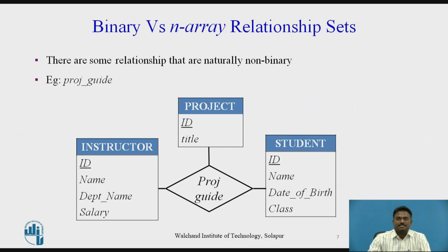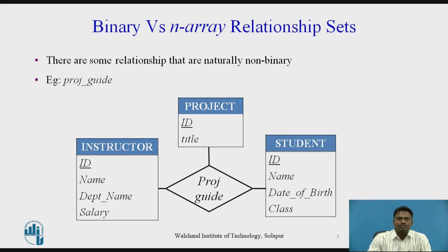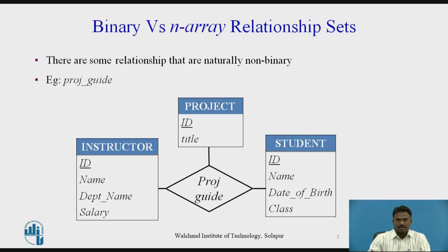But still there are some relationship sets that are naturally non-binary, like the 'project guide' relationship set shown in the figure, which relates instructor, student, and project. We cannot split this relationship into binary relationship sets between instructor and project, and between instructor and student. Even if we split it, we would only be able to record that instructor A is working on project A and project B with student A and student B — but we could not correctly represent that instructor A is working on project B with student B but not with student A.